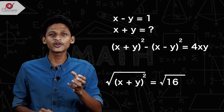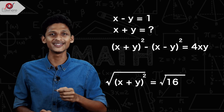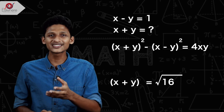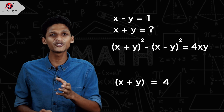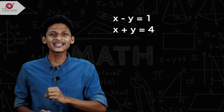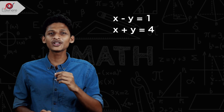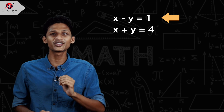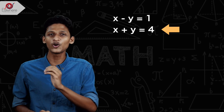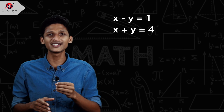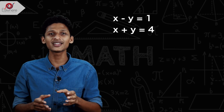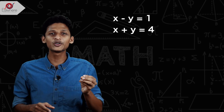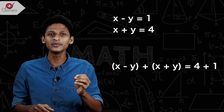x plus y all square is equal to root of 16. x plus y equals root 16, which is 4. So x plus y is 4. Now we have two equations: the first equation x minus y is equal to 1, and the second equation is x plus y is equal to 4. We have a pair of equations and we have to solve for x and y.